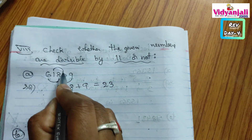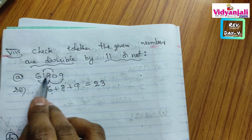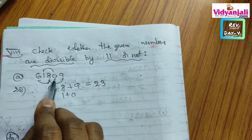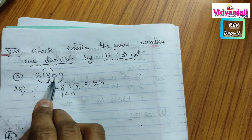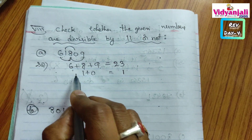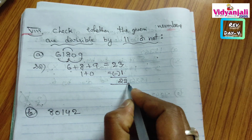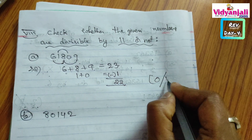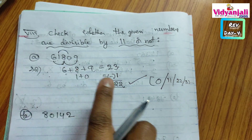Separately add the digits in even places: 0 plus 1 equals 1. After adding digits in odd places and even places separately, subtract both answers. 23 minus 1 is 22. If we get 0 or any multiple of 11 — like 11, 22, 33, and so on — we can say the given number is divisible by 11. Here 22 is a multiple of 11.